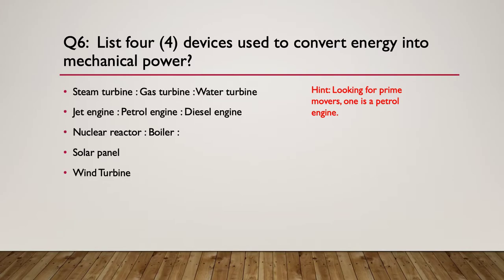Here's a list of all the possibilities. We could have had steam turbine, gas turbine, water turbine, jet engine, petrol engine, diesel engine, nuclear reactor, boiler, solar panels, wind turbine. If you've got any of those, any four of those, you've done well.